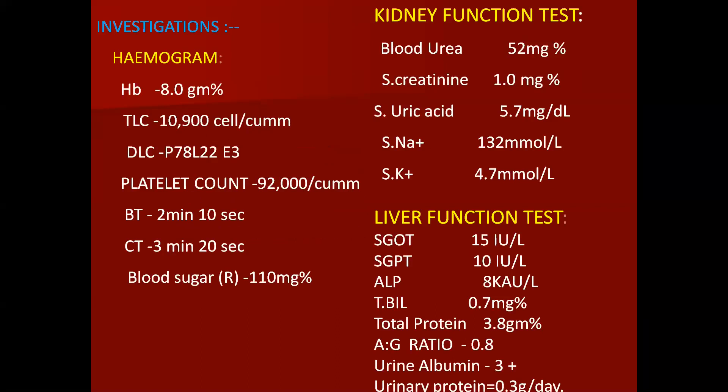On biochemical investigations, discussing only the relevant findings: hemoglobin was 8 gram percent, TLC 10,900, platelets 92,000. Serum creatinine was 1 mg%, uric acid 5.7 mg/dL. On liver function tests, bilirubin was 0.7, total proteins 3.8 gram percent, and AG ratio 0.8. On urine examination, albumin was 3+ and total urinary protein was 0.3 gram per day.